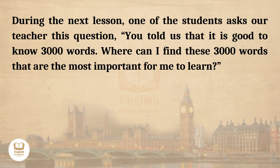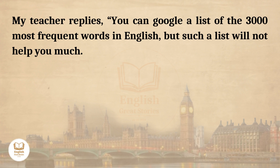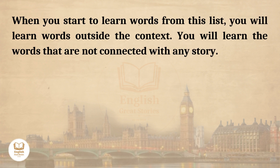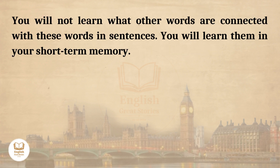During the next lesson, one of the students asks our teacher, you told us that it is good to know 3,000 words. Where can I find these 3,000 words that are the most important for me to learn? My teacher replies, you can Google a list of the 3,000 most frequent words in English, but such a list will not help you much. When you start to learn words from this list, you will learn words outside the context. You will learn the words that are not connected with any story. You will not learn what other words are connected with these words and sentences. You will learn them in your short-term memory.